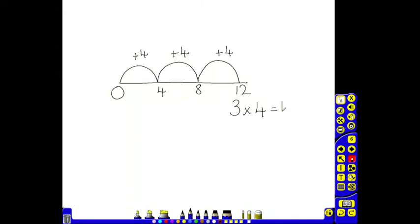Children may also use a number line to show these repeated jumps. So, with 1 car, there are 4 wheels. With another car, there are another 4 wheels which gives us 8. And a 3rd car gives us another 4 wheels which makes 12. 3 lots of 4 make 12. 3 multiplied by 4 equals 12.